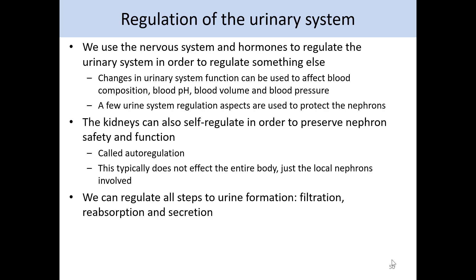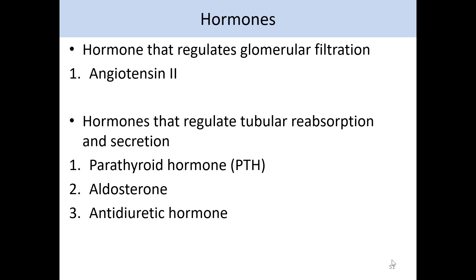The self-regulation is called auto-regulation. When this auto-regulation occurs, it's not typically affecting the entire body, just the local nephrons where the action is taking place. And don't forget, there are three steps to urine formation, and we can regulate all three of those steps: filtration, reabsorption, and secretion. We're first going to take a look at how we can use hormones to regulate the urinary system, and then we'll take a look at how we can use the nervous system.